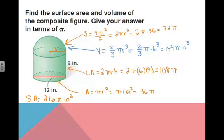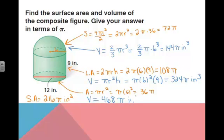Then I've got to find the volume of this cylinder here, which is πr²h. So it's π times 6² times 9. That is 36 times 9, which is 324π cubic inches. So the total volume, the volume of the hemisphere plus the volume of the cylinder would be 144 plus 324, which is 468π cubic inches. So we found both the surface area and the volume of that composite figure.